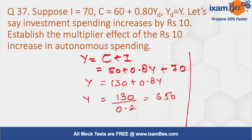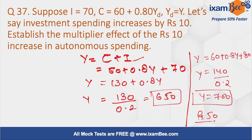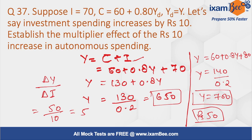Now we increase investment by rupees 10. The new output equation becomes 60 plus 0.8Y plus 80, giving 140 upon 0.2, so the new Y equals 700. The change in output is rupees 50. The multiplier equals change in Y upon change in I, which is 50 divided by 10, giving a multiplier of 5.